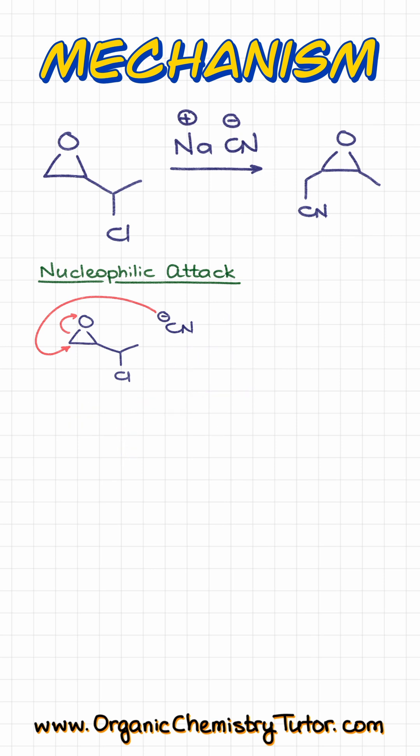If I go with this attack, the intermediate that I am going to get here is going to look something like that. Now, in this case, I ended up with the O- which is a nucleophile, and we have this chlorine that is a leaving group, meaning that the carbon to which chlorine is attached is an electrophile.